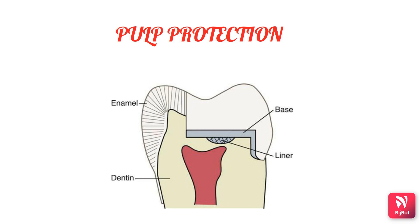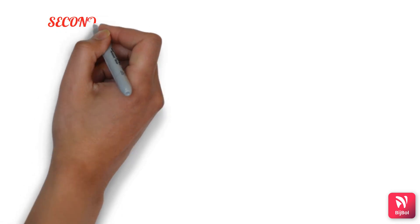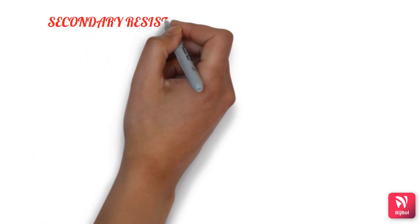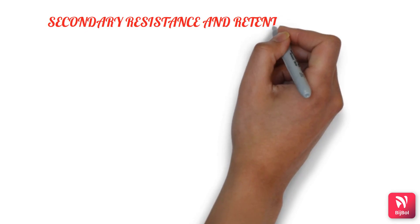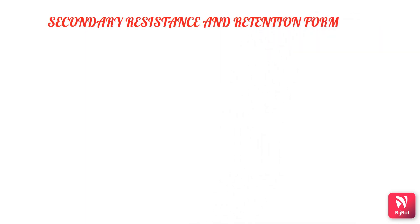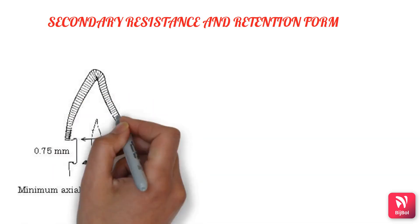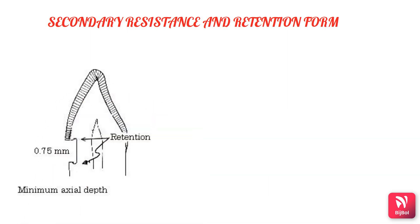The next step is the secondary resistance and retention form. It is necessary in cases of compound or complex cavity preparations where additional preparation features are required to improve the resistance and retention forms. One of the mechanical features is retention grooves — these are retention locks placed in a vertical plane.